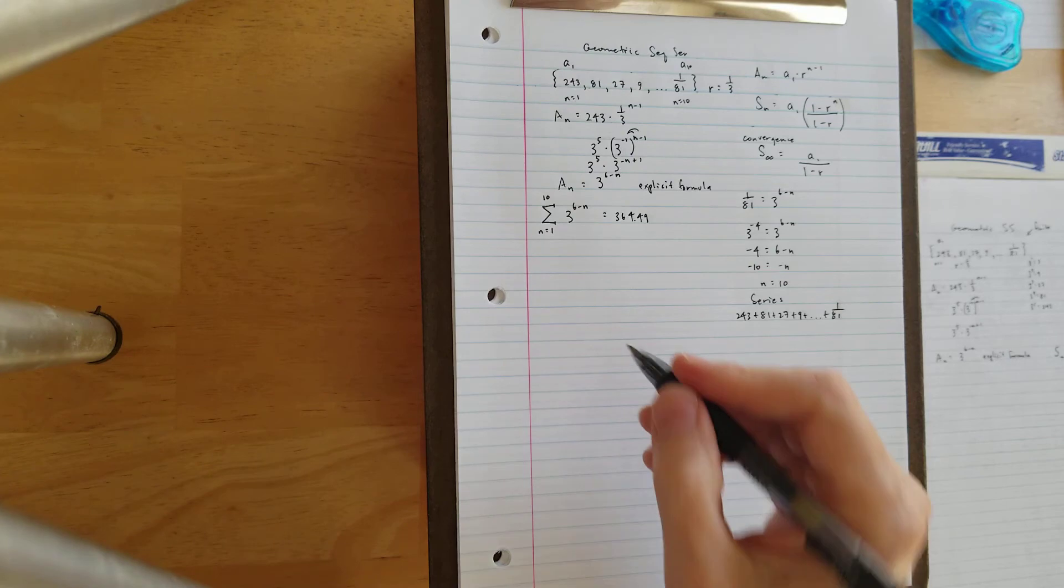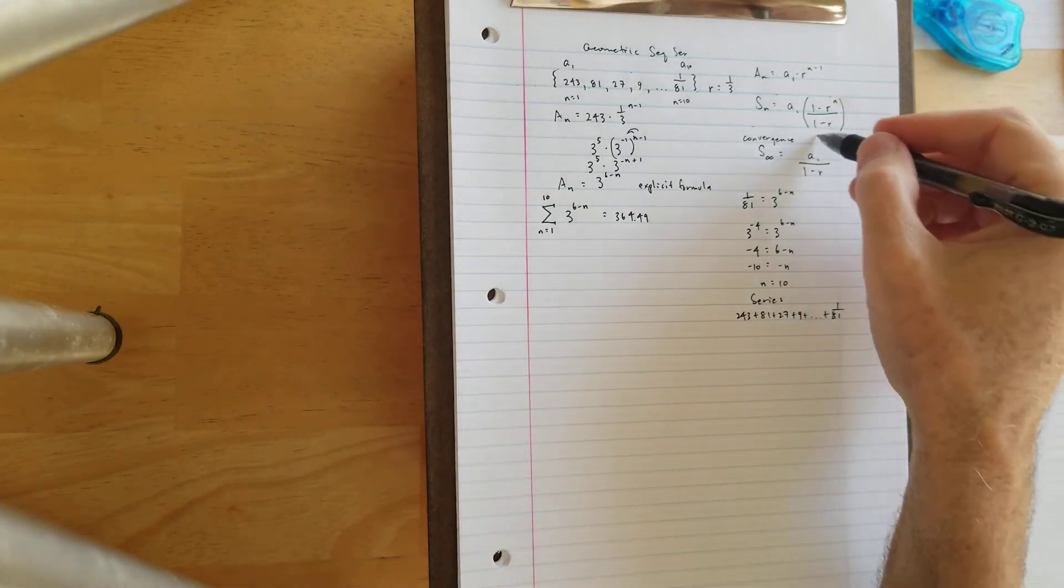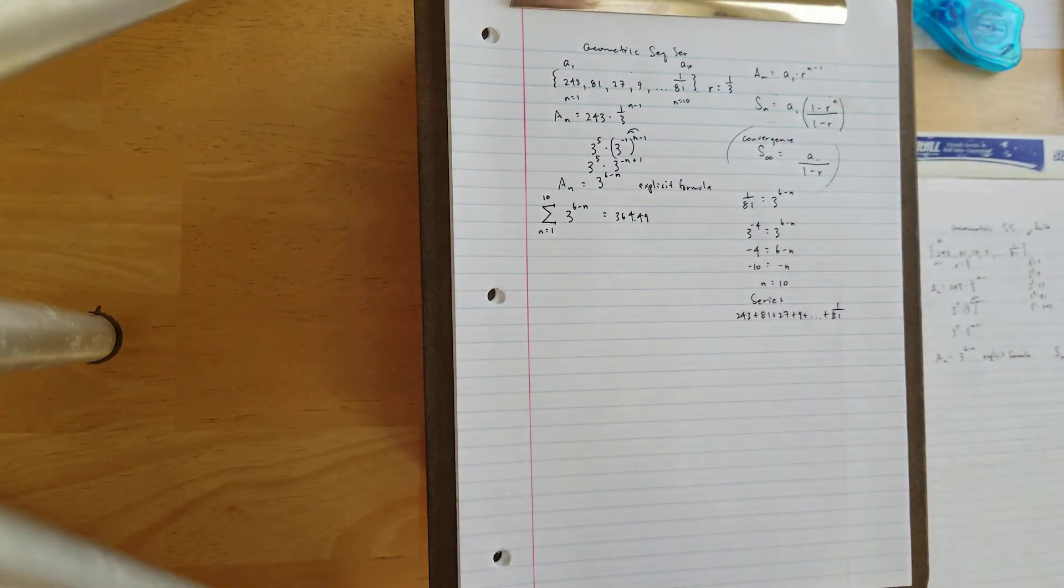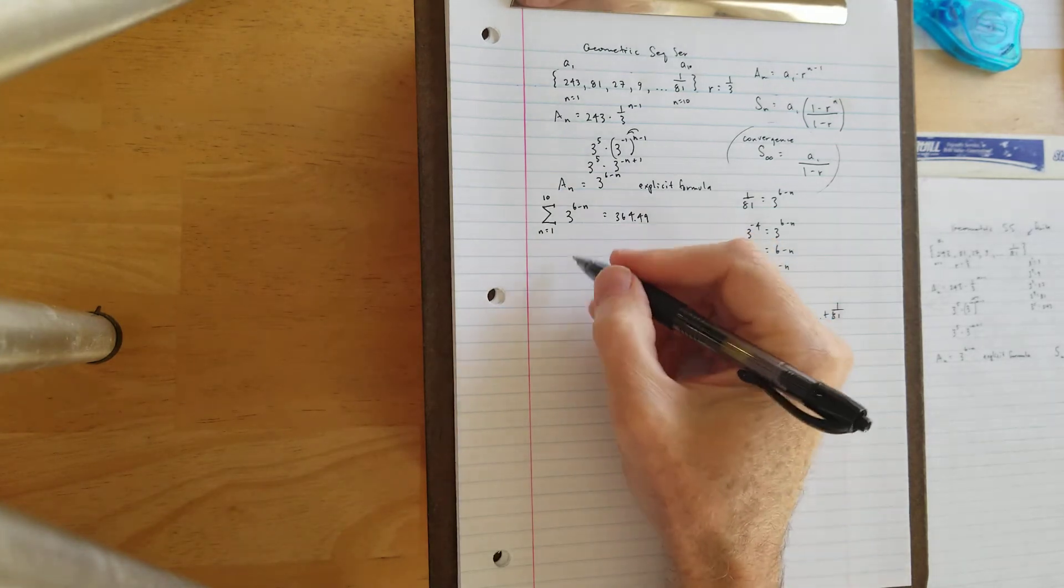And now let's just talk a little bit about the infinite sum formula, and when we use it, what convergence is, and how that works. Well, this particular sum, let's go back and put 243 plus 81 plus 27.